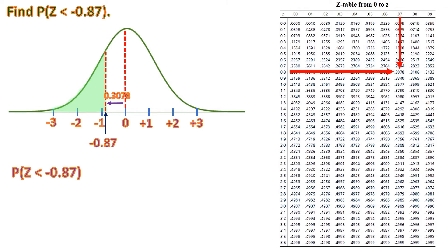The probability of z less than negative 0.87: the left half of 0 is 0.5, and we subtract 0.3078 because that portion is not part of the shaded area. The difference is 0.5 minus 0.3078, which equals 0.1922. That is the area of the shaded part.